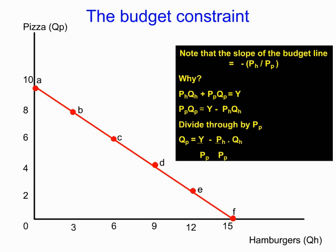An important aspect of the budget line is its slope. The slope of the budget line is equal to the price of the hamburger divided by the price of the pizza — or more generally, the price of X divided by the price of Y — and it has a negative sign in front of it.